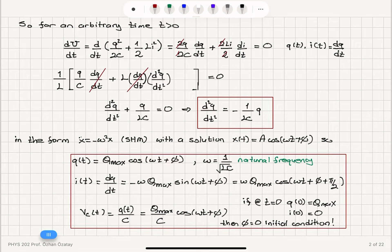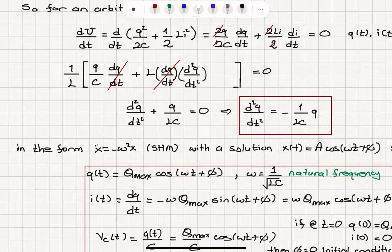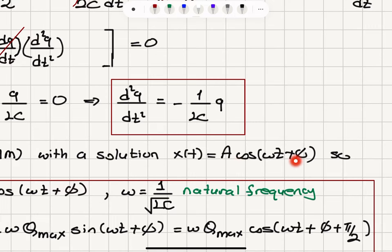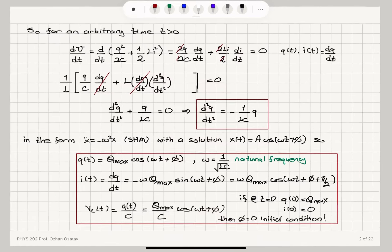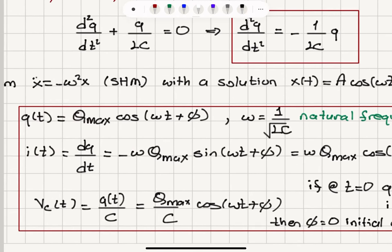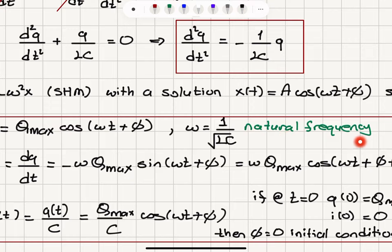This is a differential equation describing simple harmonic motion: Q double-dot equals minus omega squared Q, where omega equals 1 over square root of LC. After recognizing it as the equation of motion for simple harmonic motion, we can write the solution: Q as a function of time equals Q max cosine(omega·t plus phi), where omega equals 1 over square root LC is the natural frequency of oscillation. Taking a derivative gives minus omega·Q max·sine(omega·t plus phi), which equals omega·Q max·cosine(omega·t plus phi plus pi/2).